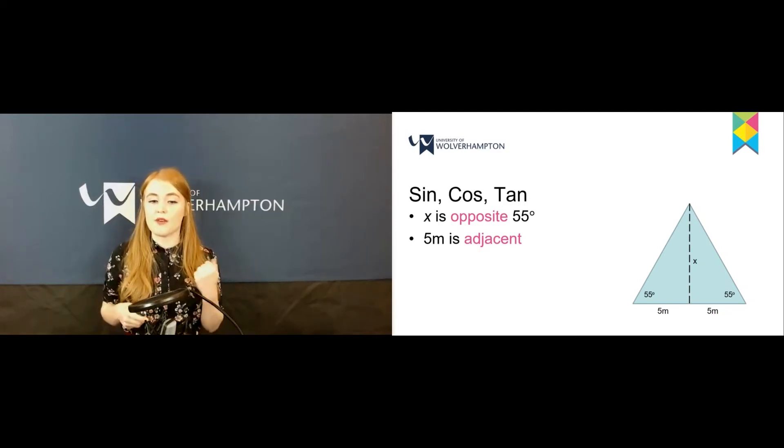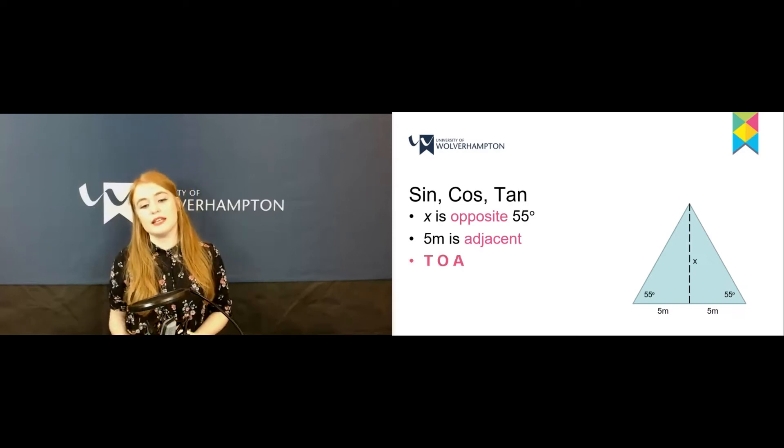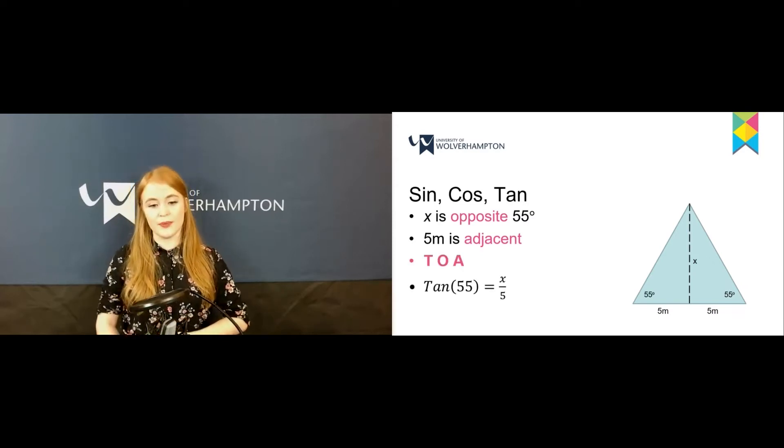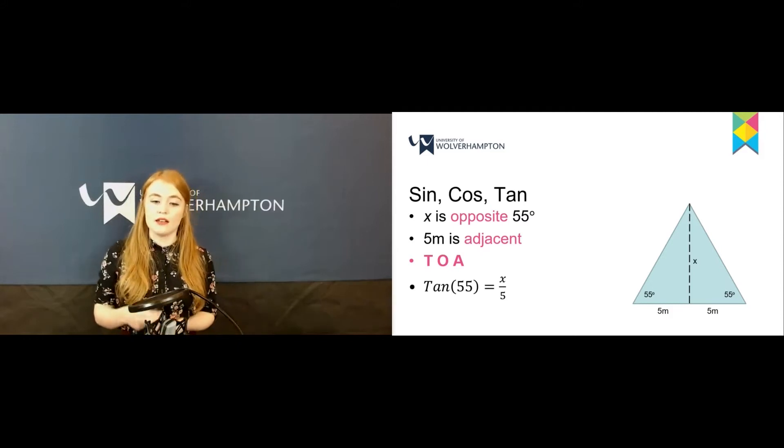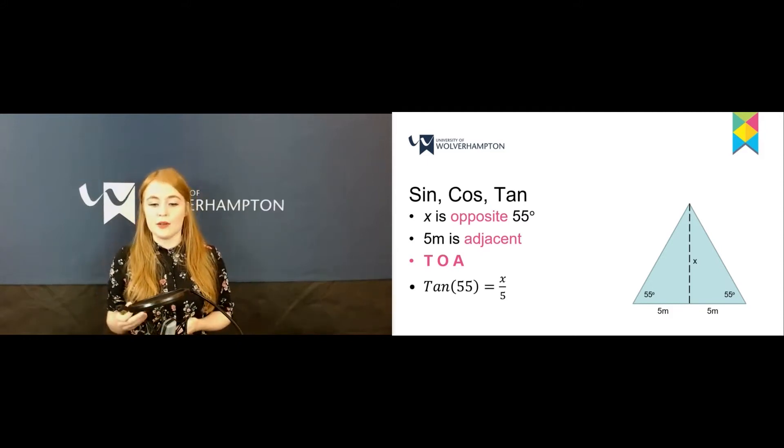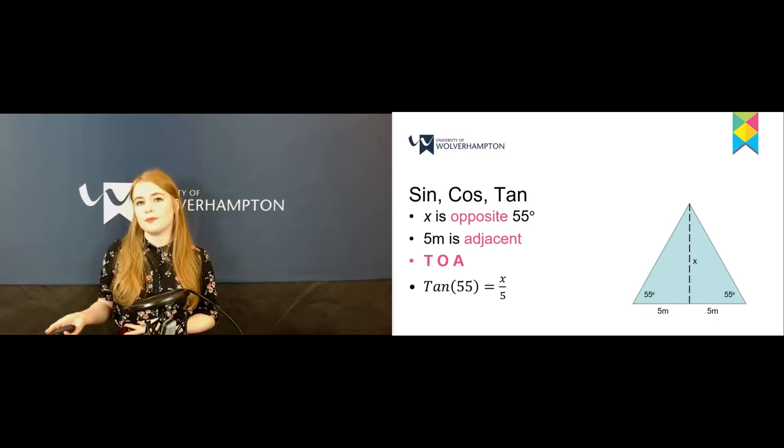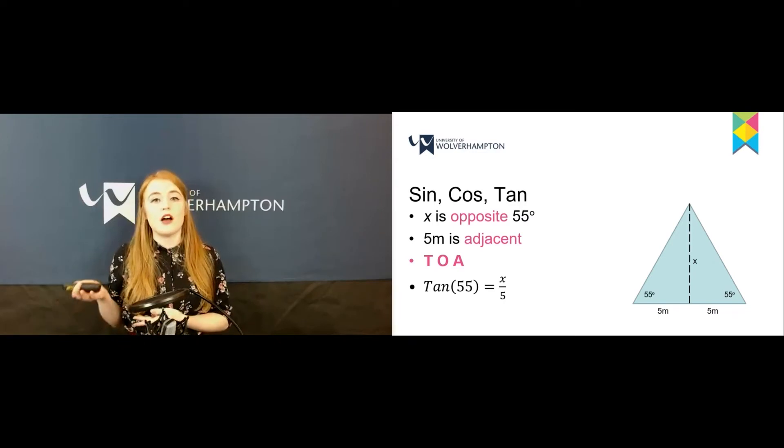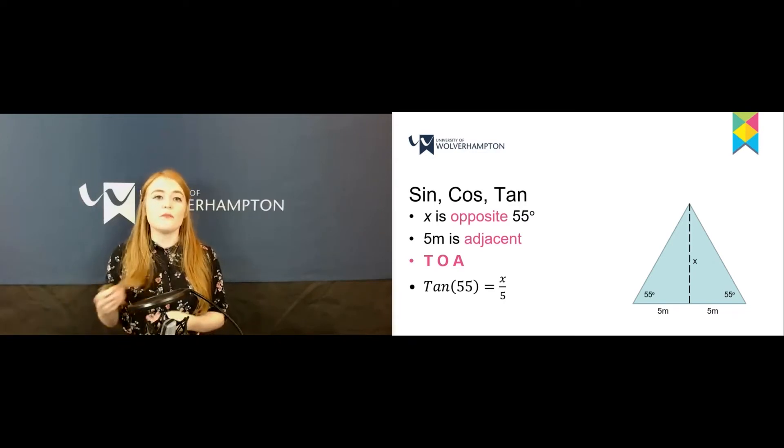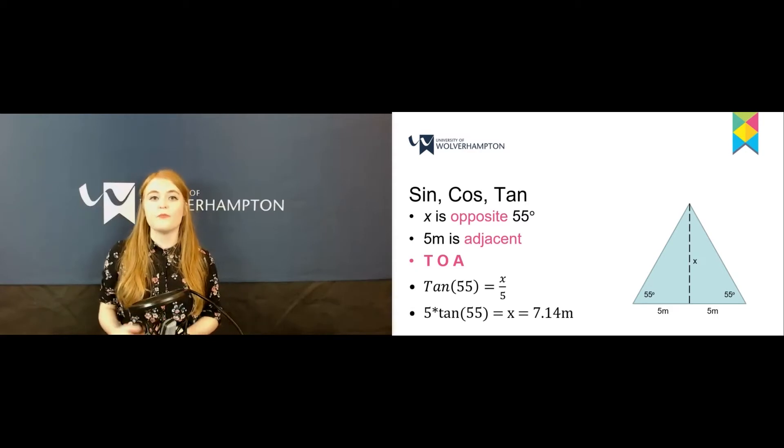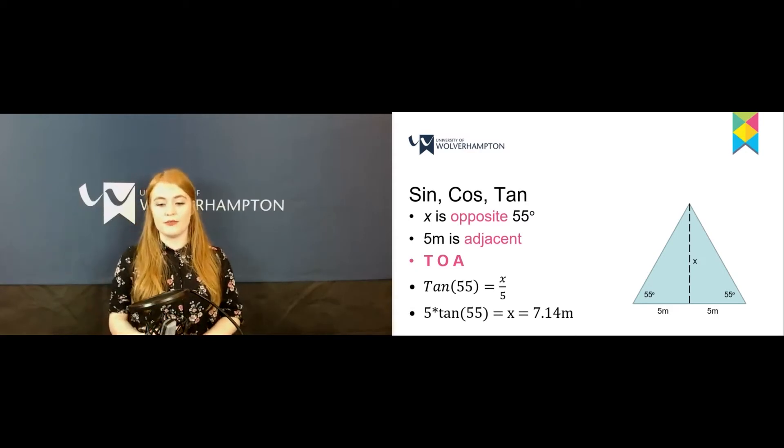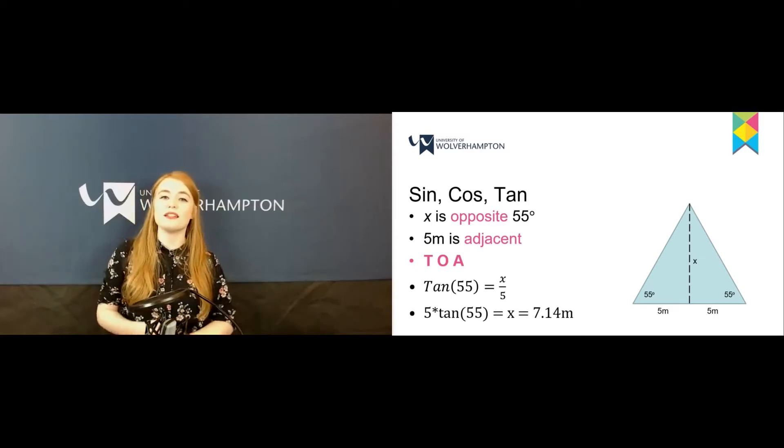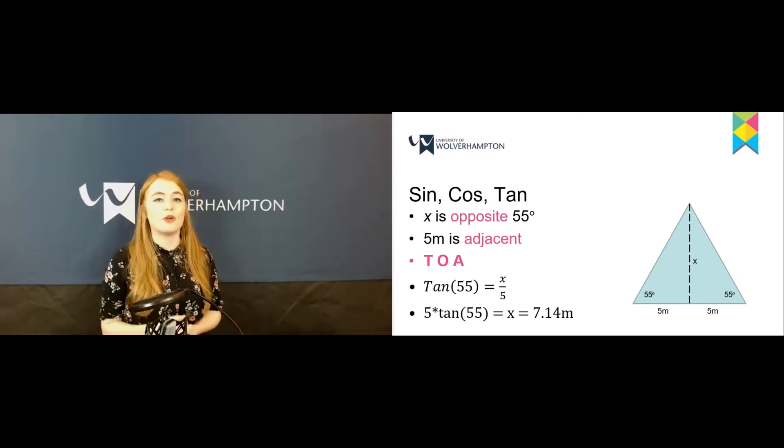We have the angle of 55, the opposite, and the adjacent. So we have O and A, which means we need tan. We do tan(55) = x/5. Using our algebra skills to rearrange, 5 × tan(55) = x. When you put that into your calculator you get 7.14.